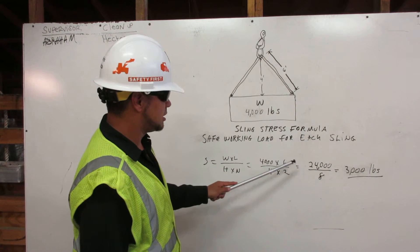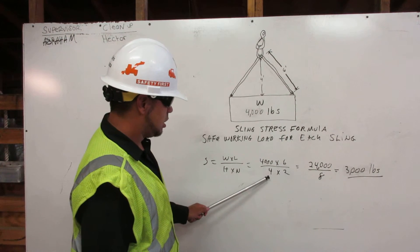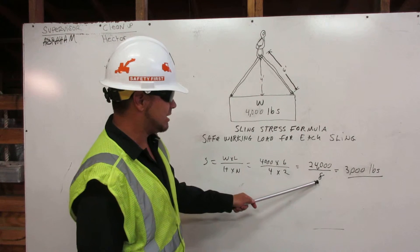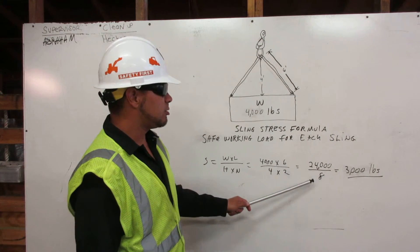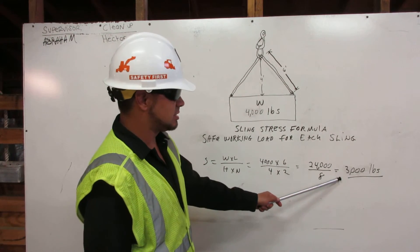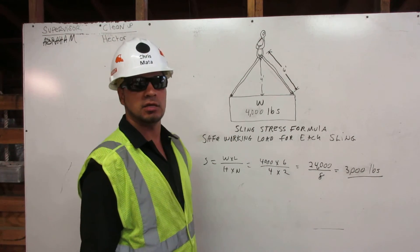So, 4,000 times 6 is 24,000. 4 times 2 equals 8. 24,000 divided by 8 is 3,000 pounds. That's the safe working load for each sling. Thank you.